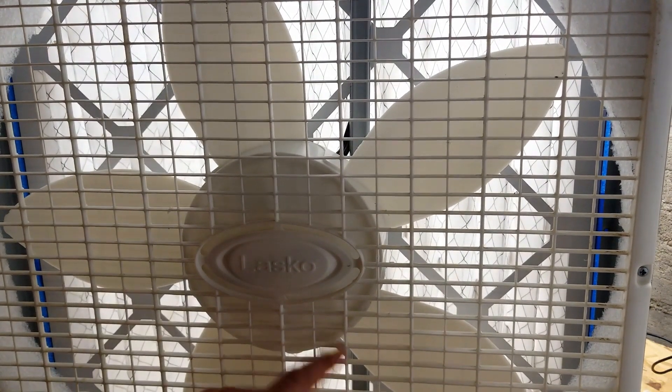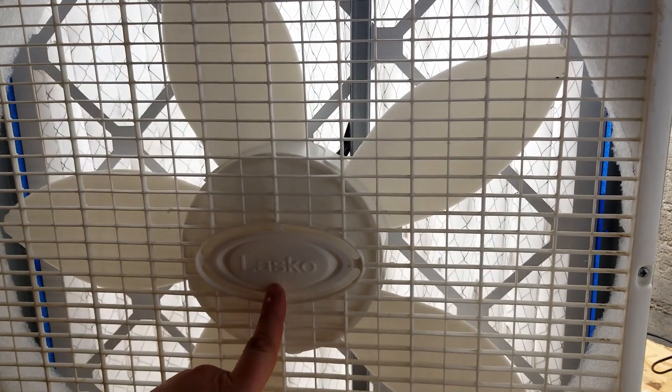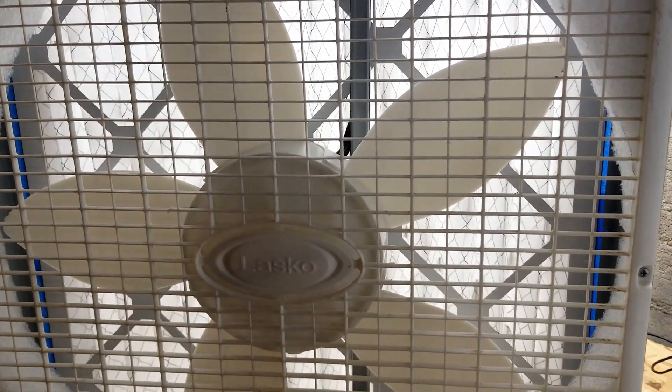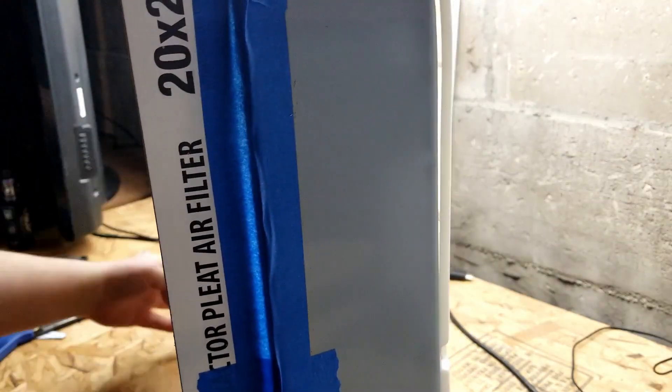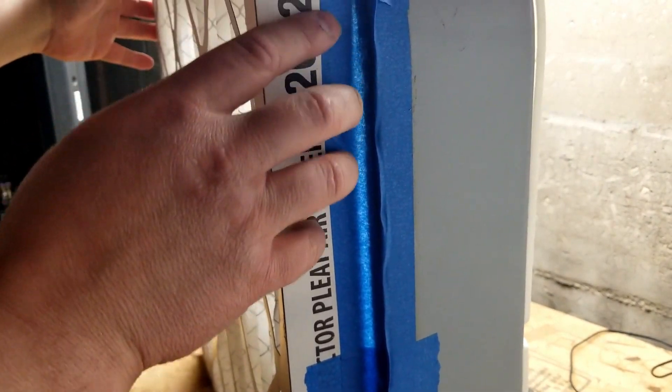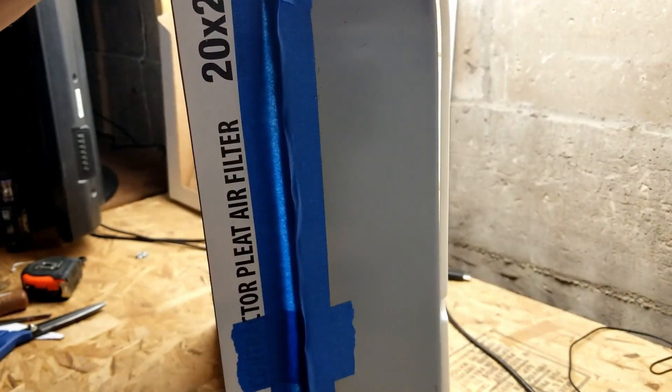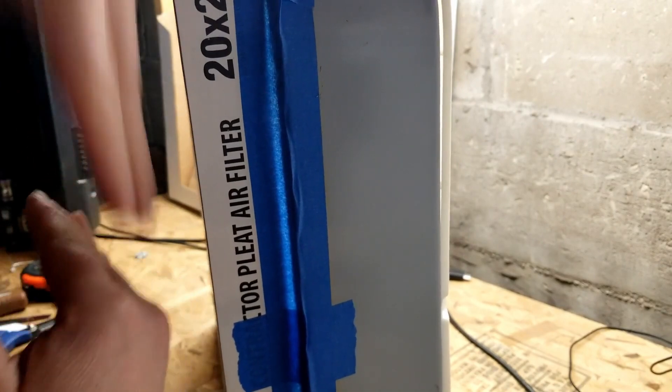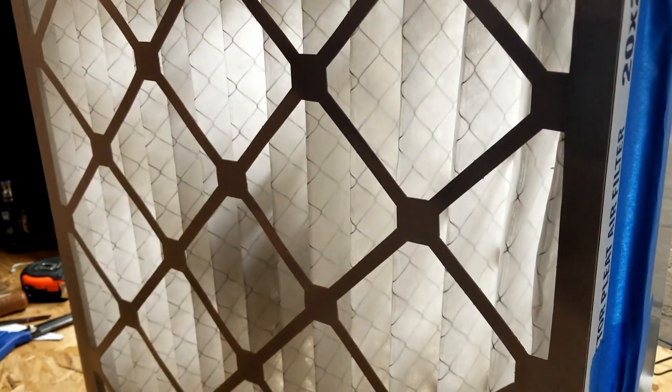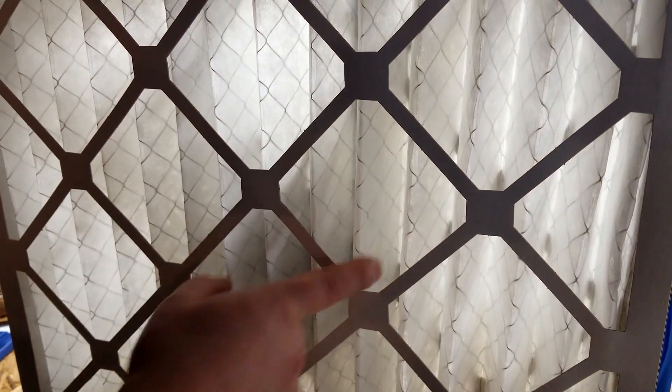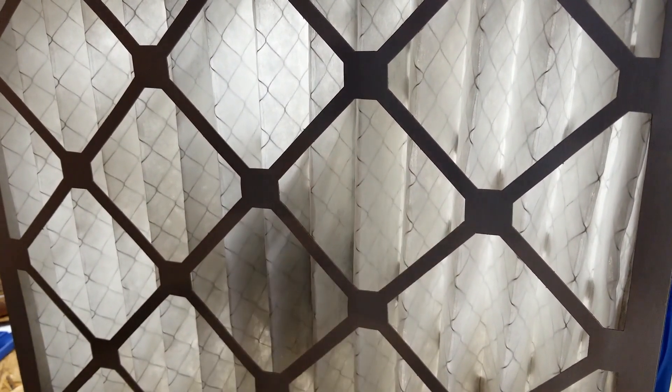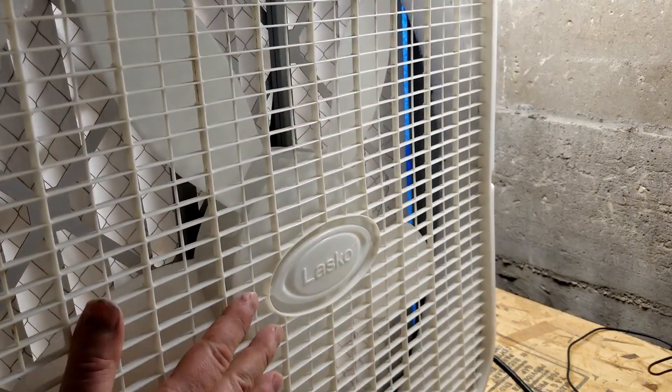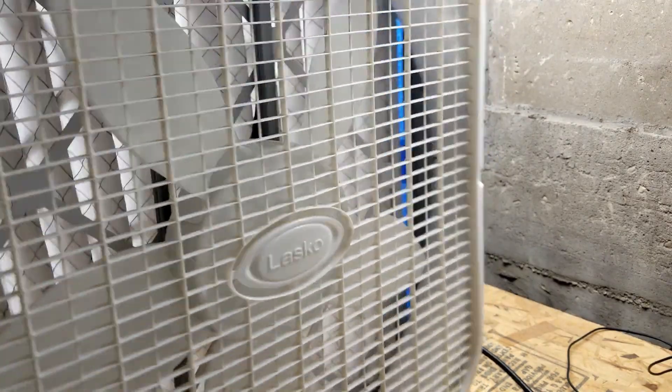Now if you want, Lasko actually makes a fan now with a filter on the back. It's got like a big plastic thing in the back and it unsnaps at the top, tilts back, and you can slide a one-inch filter in there. But these fans suck so much, a nice two-inch filter gives you a little more surface area, a little more airflow that way. The pressure drop's not too bad.